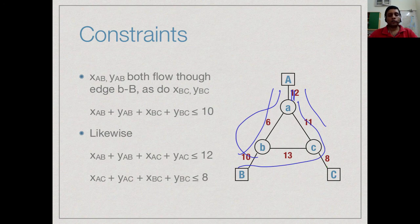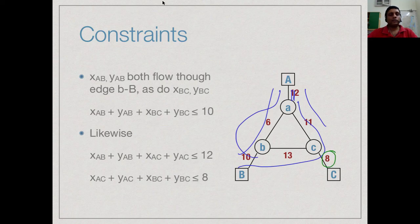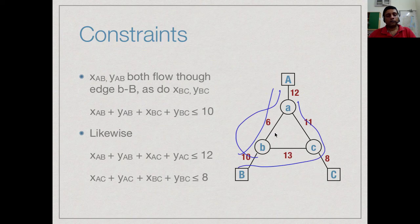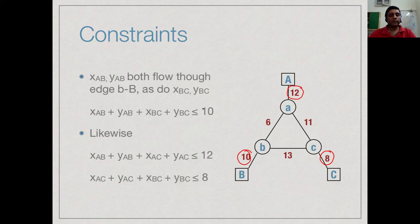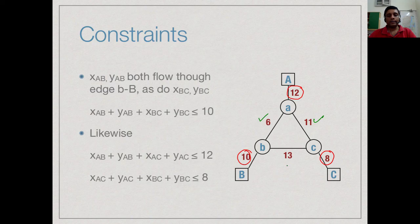And the third same holds for this. These 3 constraints that we have seen here account for the capacities of the tail end links. We have accounted for this capacity, this capacity and this capacity. These 3 capacities are connected to our flows by these 3 equations. This still leaves us to account for these 3 constraints.